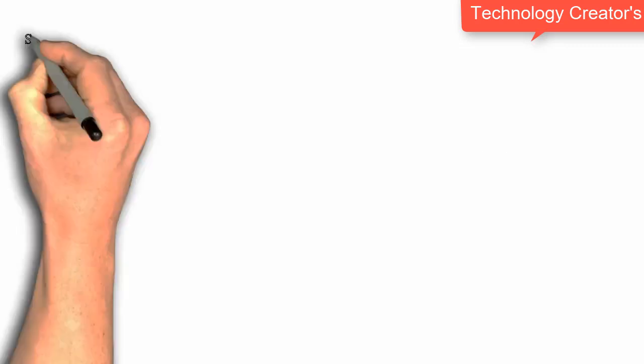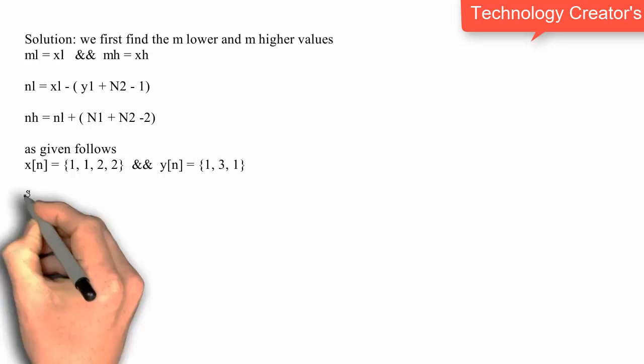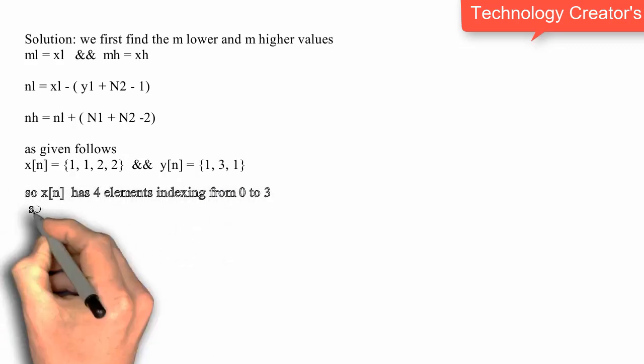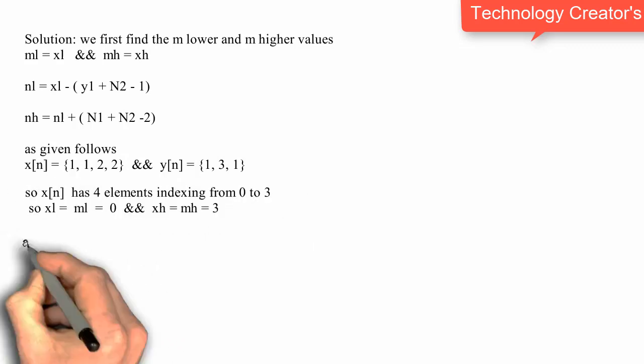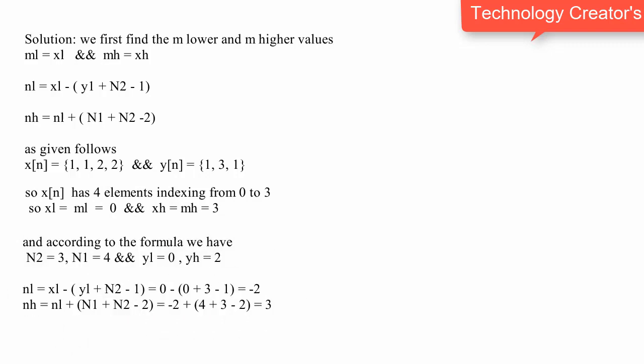First of all, find the values of the variables like N of L, N of H, M of H, and M of L. As the formula is given in the video, but before that please know what is the N1 and N2 values. N1 corresponds to the number of elements in one set, say X of N, and N2 corresponds to the number of elements in another set, let's say Y of N.